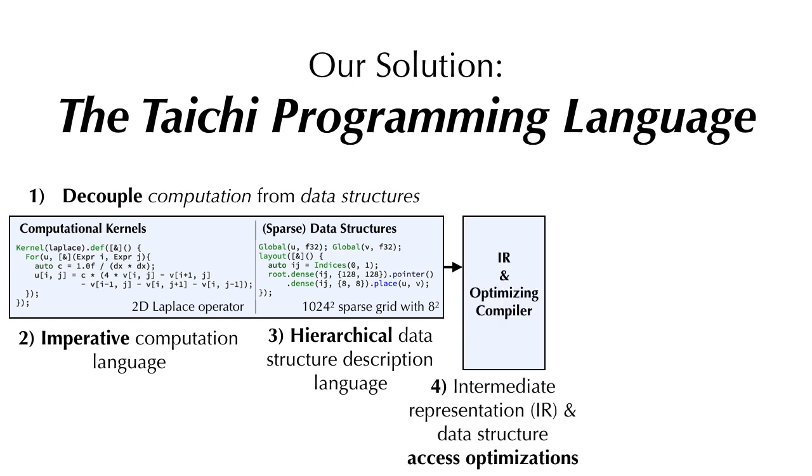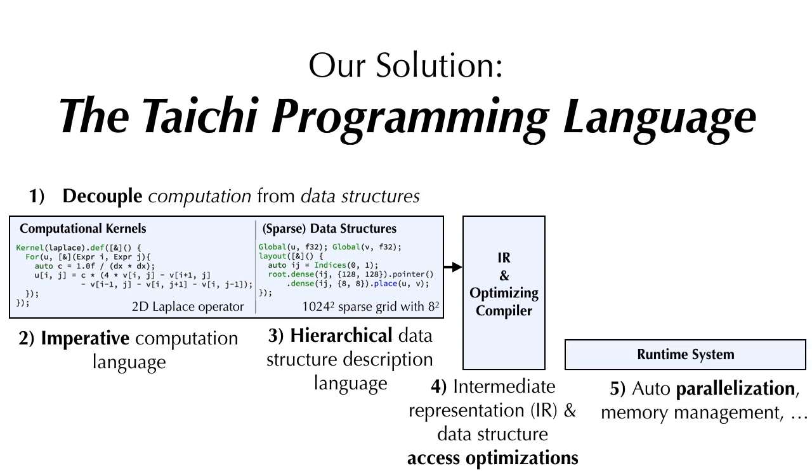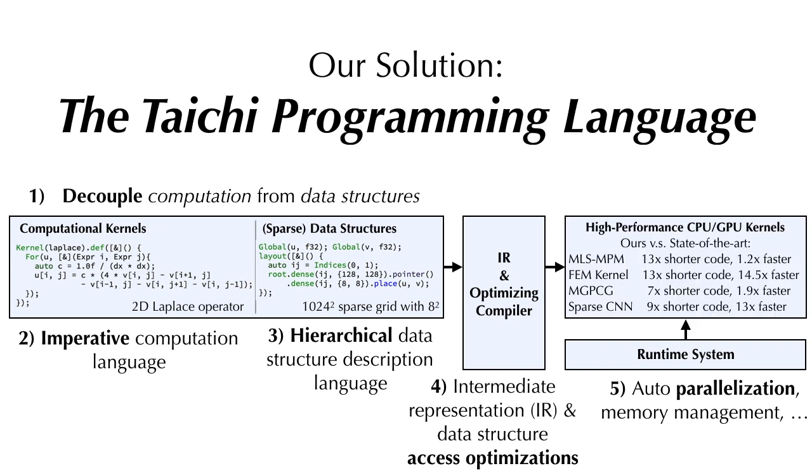Our intermediate representation is tailored for data structure access optimizations, which are done automatically by the Tai Chi compiler. The runtime system provides infrastructure such as auto-parallelization and memory management. The code generator emits either CPU or GPU executables. Our benchmarks show that we can get 4.55x higher performance with only one-tenth lines of code.